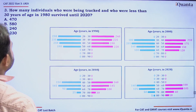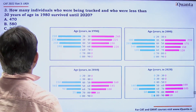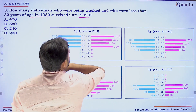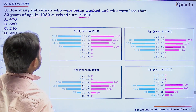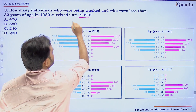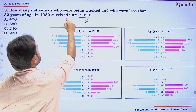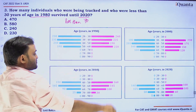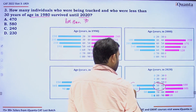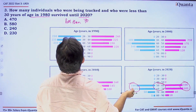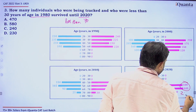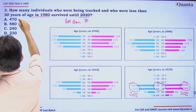Question 3: How many individuals who were being tracked and who were less than 30 years of age in 1980 survived until 2020? Those under 30 in 1980 would be under 70 in 2020. Looking at the 2020 figure for age groups below 70: males sum to 265 and females sum to 205. Total = 265 + 205 = 470. Option A is correct.